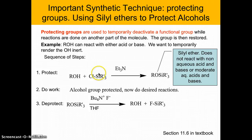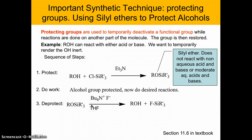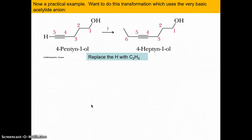The way protecting groups work: first we protect our alcohol using a chlorosilane and a little bit of base. Then we carry out whatever reaction we want to do. Finally, we use a fluoride source to take the silyl group off.